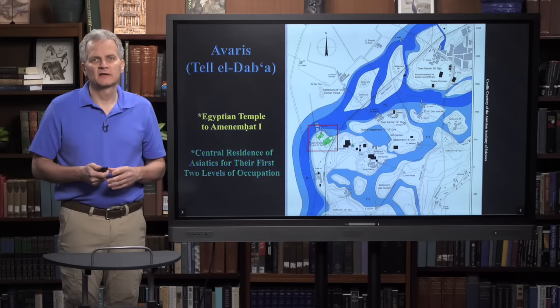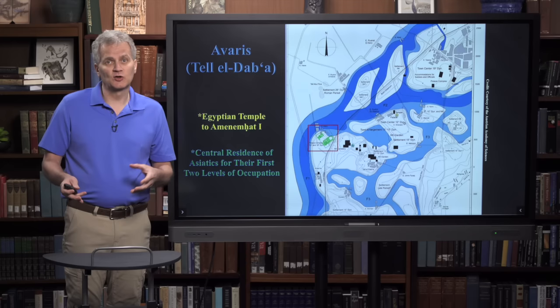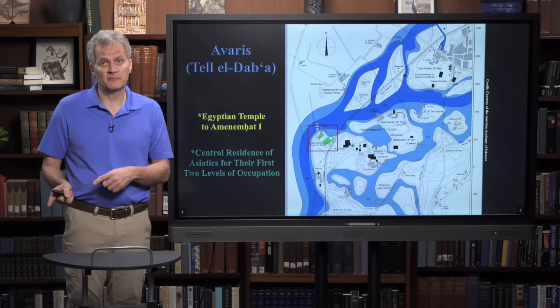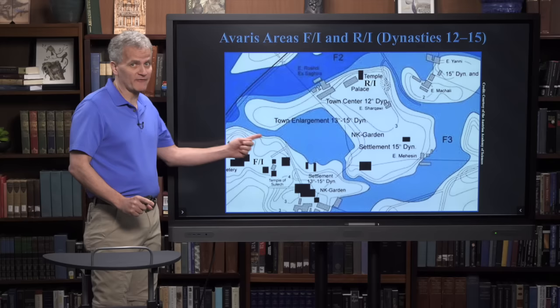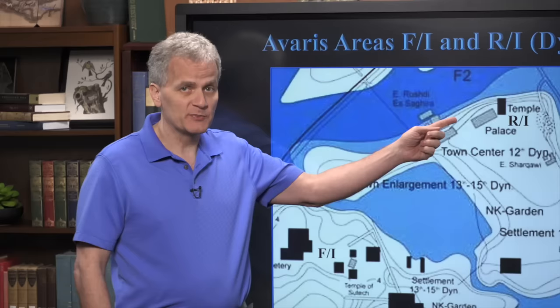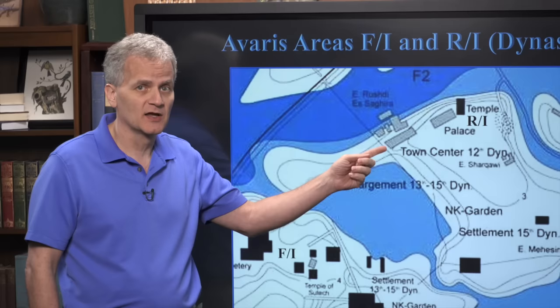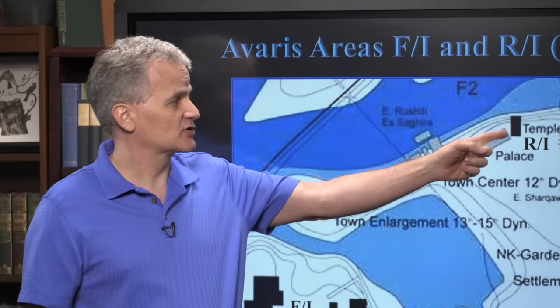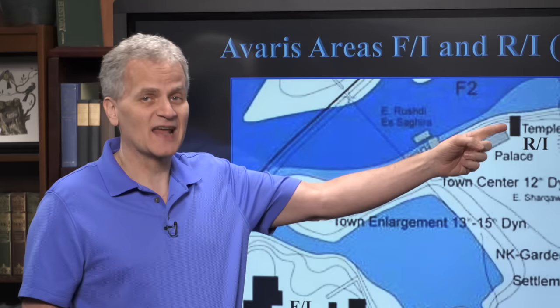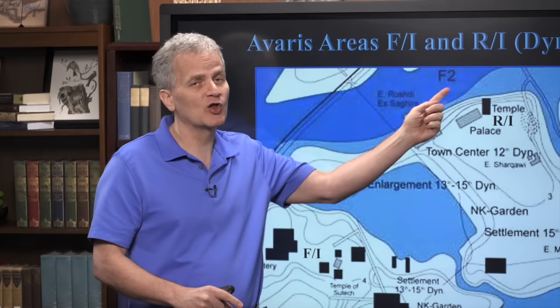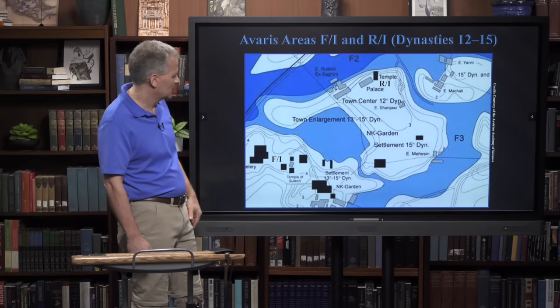Let's look at a closer view of the area where the Israelites were living in the days of Joseph's family, including Jacob's settlement and the second Asiatic occupational phase, where Joseph's sons Ephraim and Manasseh had moved to the site. We have Area F1 where the Israelites settled, and Area R1 where the Egyptians were before the Israelites arrived, including a town center and a temple near the top of R1. It's very important to note how close the temple is to the Pelusiac branch of the Nile, because that's going to come into play later.